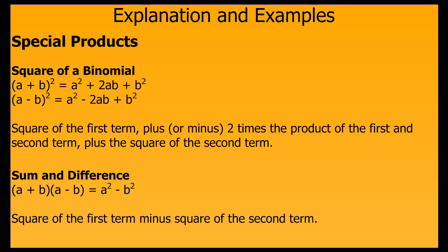Let's take a look at the patterns of these special products. For the quantity a plus b squared, when we multiply it out, we always get a squared plus 2 times a times b plus b squared. It's always the first term squared plus 2 times the first term times the second term plus the second term squared.